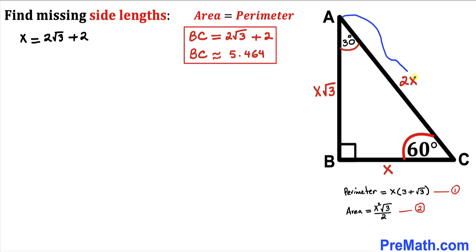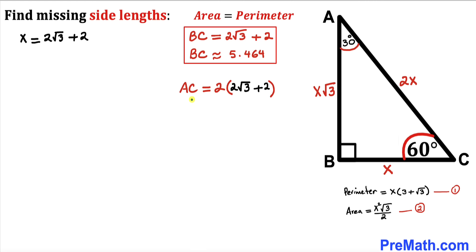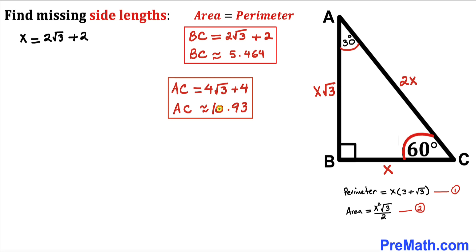Now our hypotenuse AC equals 2 times x. Substituting our x value and distributing the 2, AC equals 4 times square root of 3 plus 4, which in decimal is approximately 10.93 units.